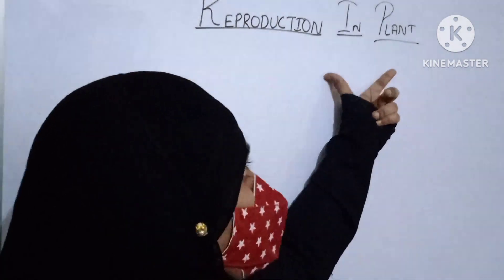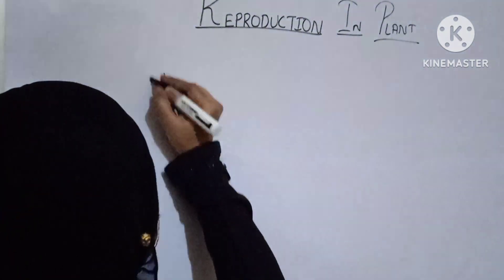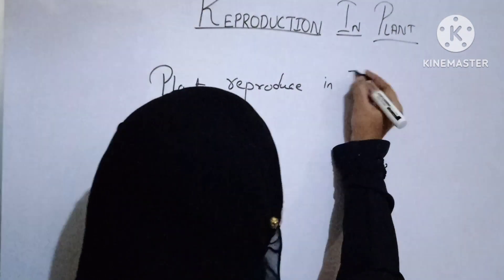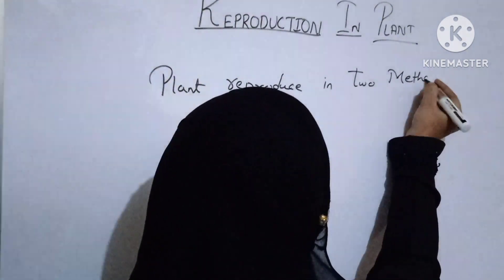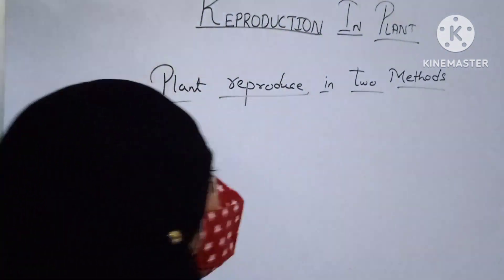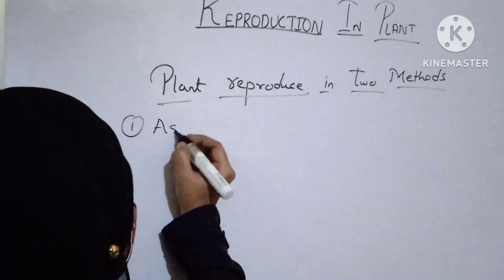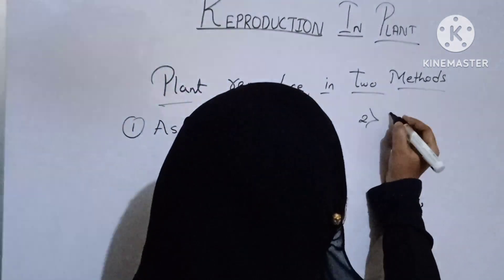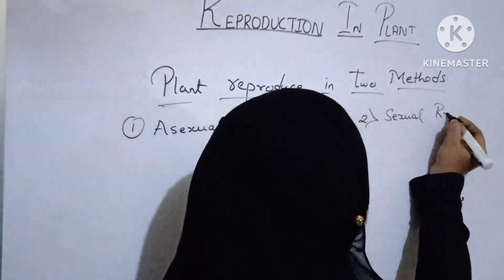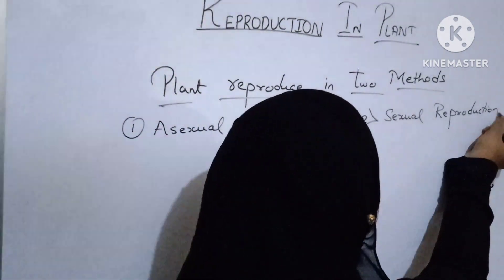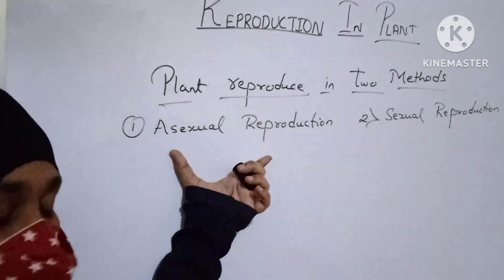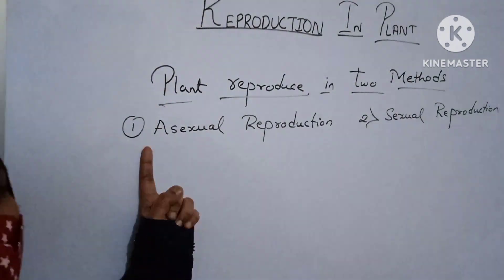There are two methods in which plants can reproduce. One is asexual reproduction and the second is sexual reproduction. Now we will see how asexual reproduction works and how sexual reproduction works. First of all, we will see asexual reproduction in plants.